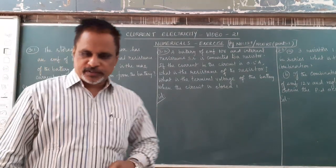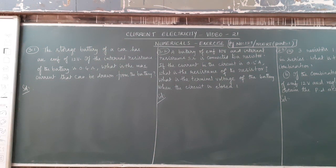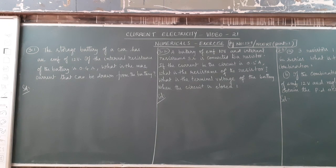Read the first numerical displayed on the board. A storage battery of a car has an EMF of 12 volt. If the internal resistance of the battery is 0.4 ohm, what is the maximum current that can be drawn from the battery?